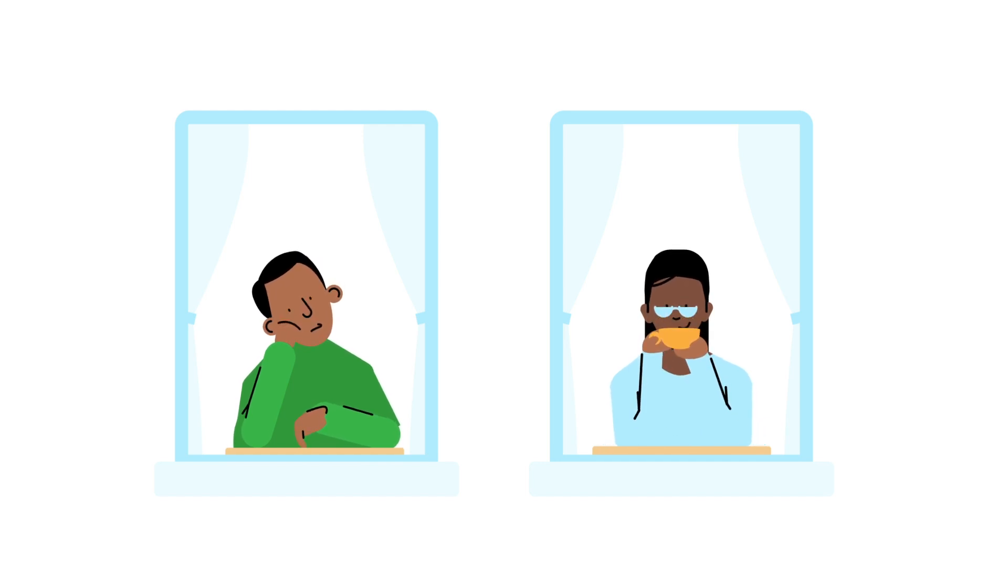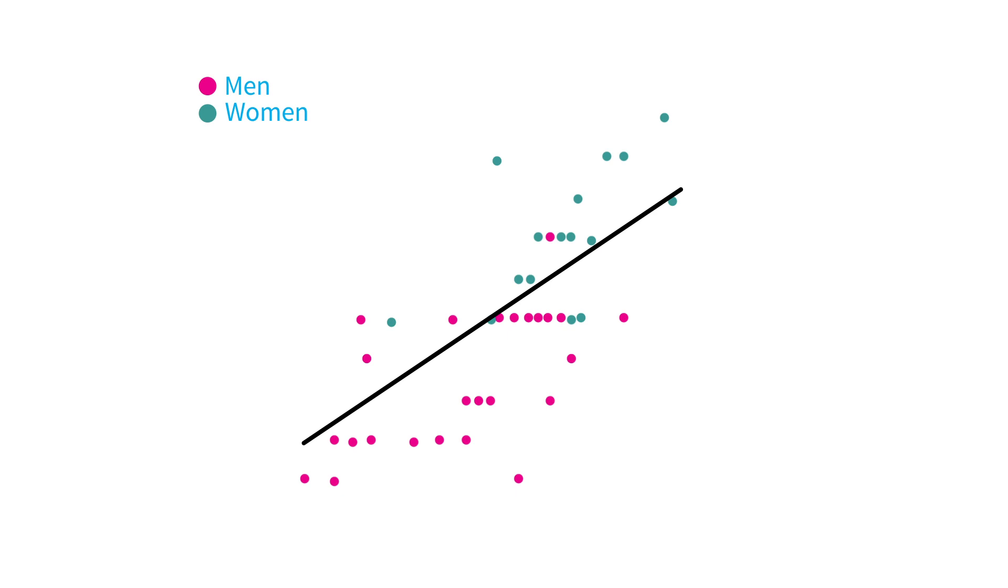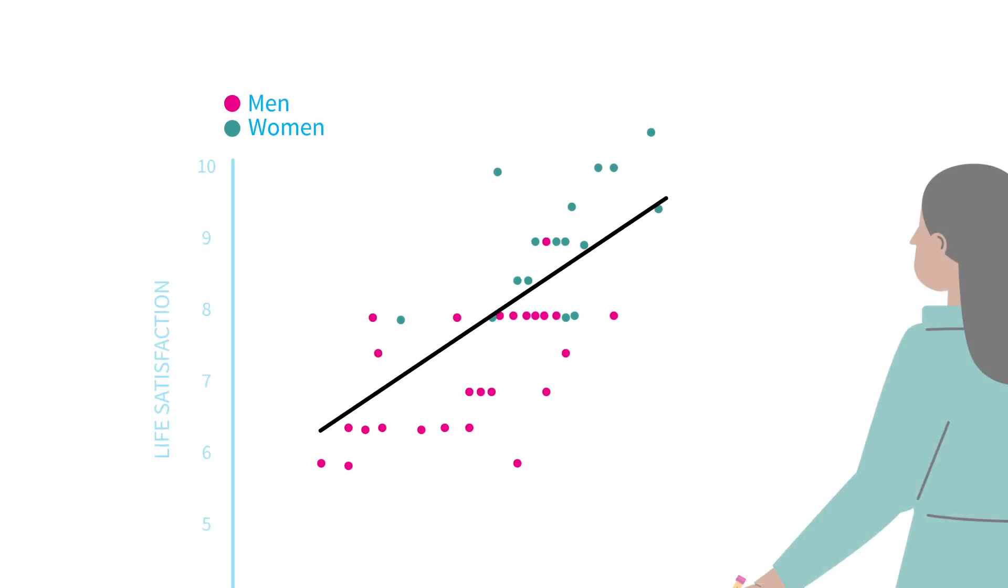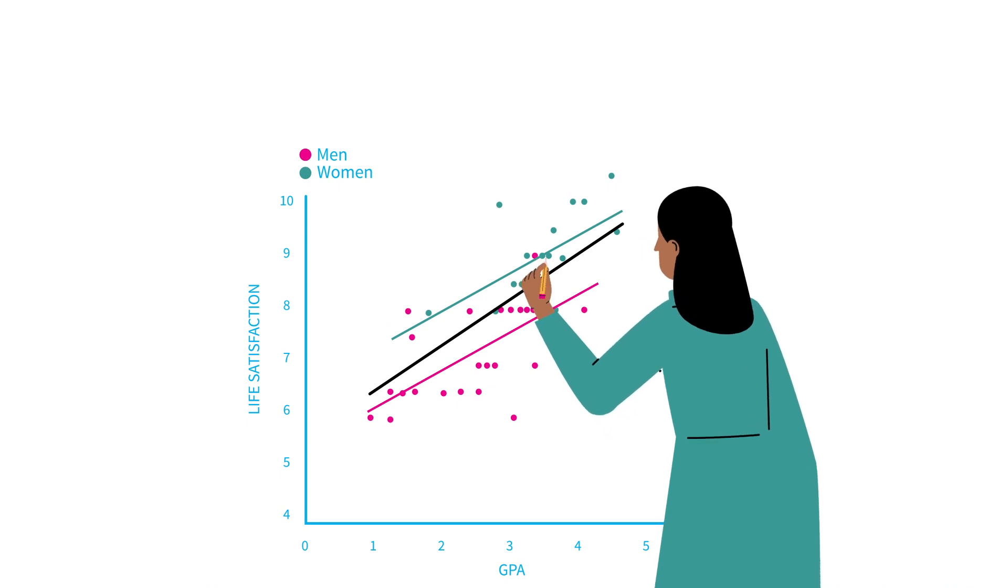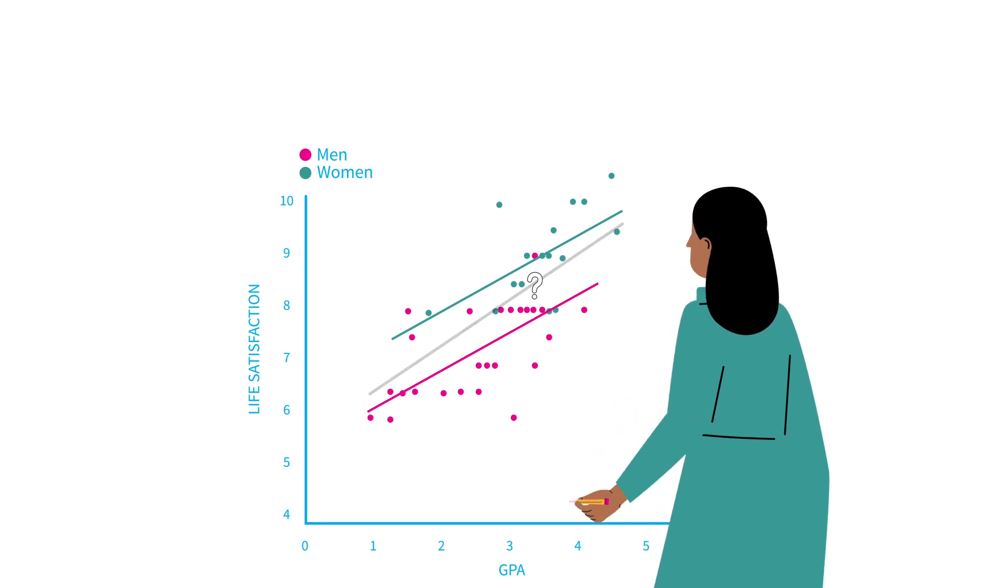With regression analysis we can simply add a variable for sex to our model. After controlling for sex, the estimated association between academic performance and life satisfaction in middle age is weaker.